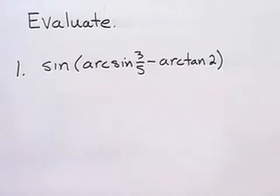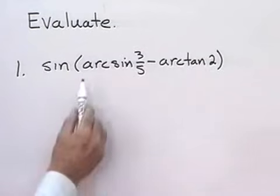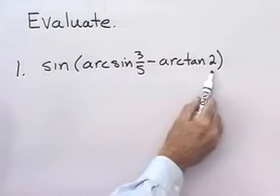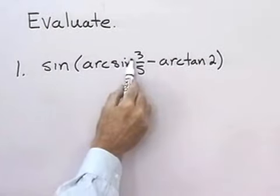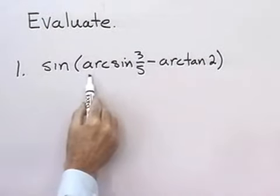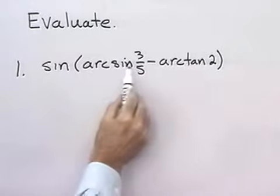Here, I want to evaluate the sine of arc sine 3 fifths minus arc tangent 2. Know that this notation here is the same as inverse tangent, like sine with a little minus 1 3 fifths. Well, I'm not sure. This looks like a pretty complicated expression.